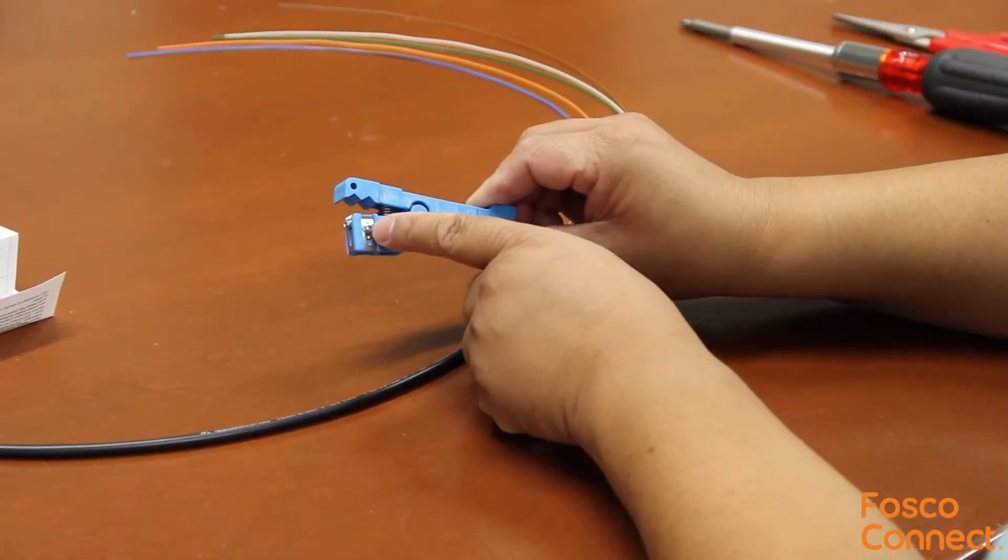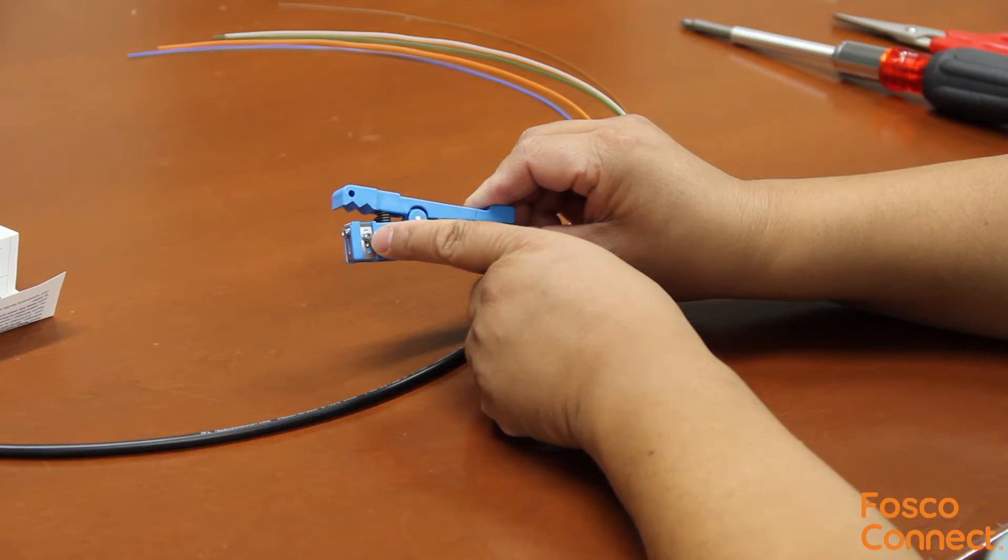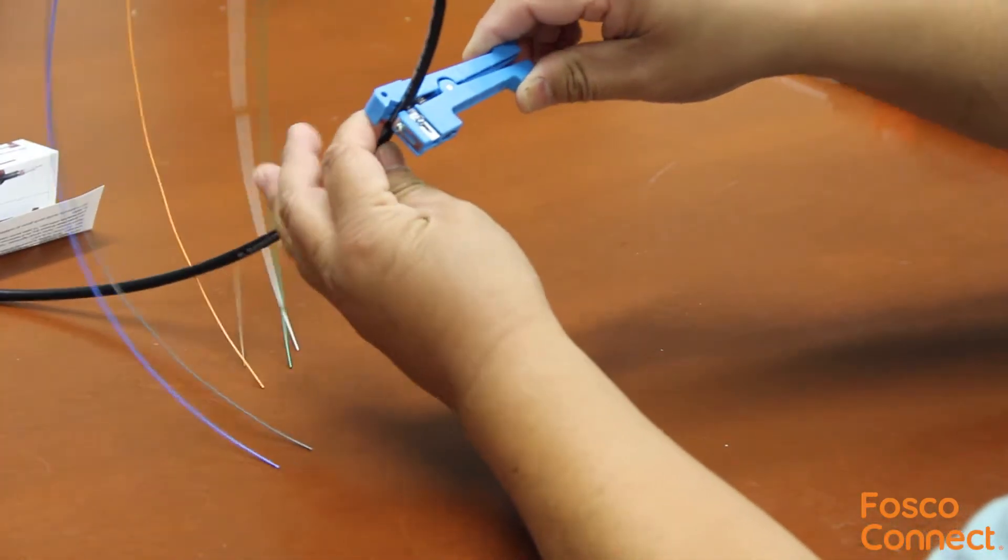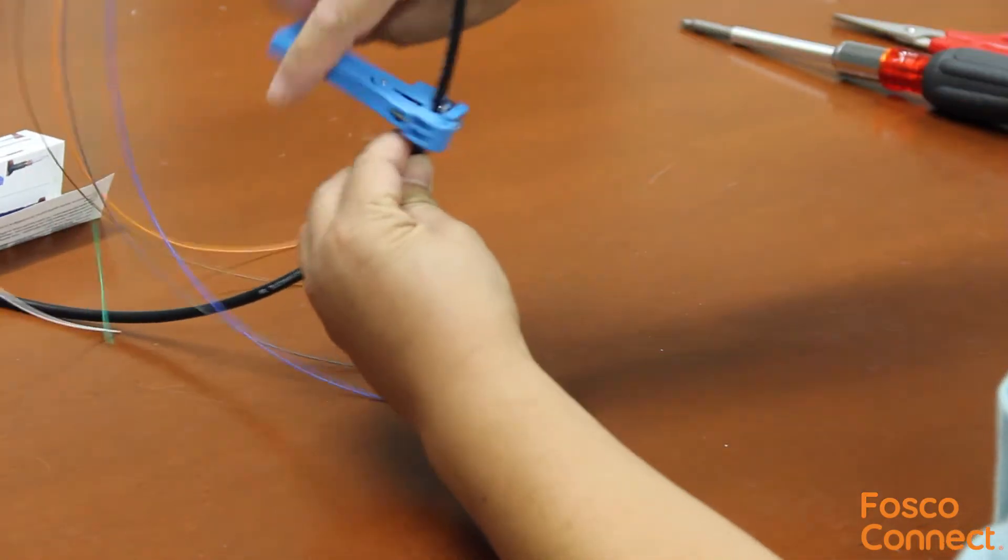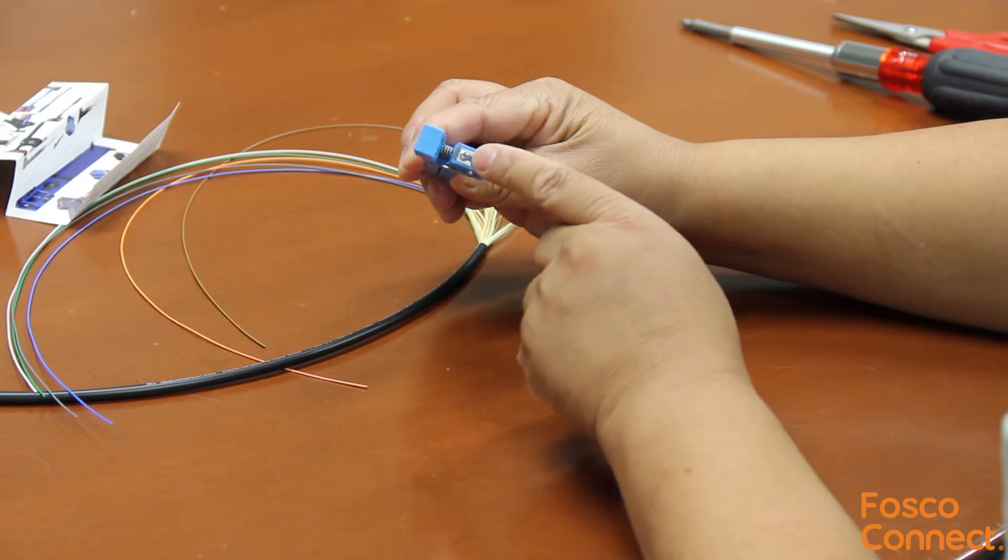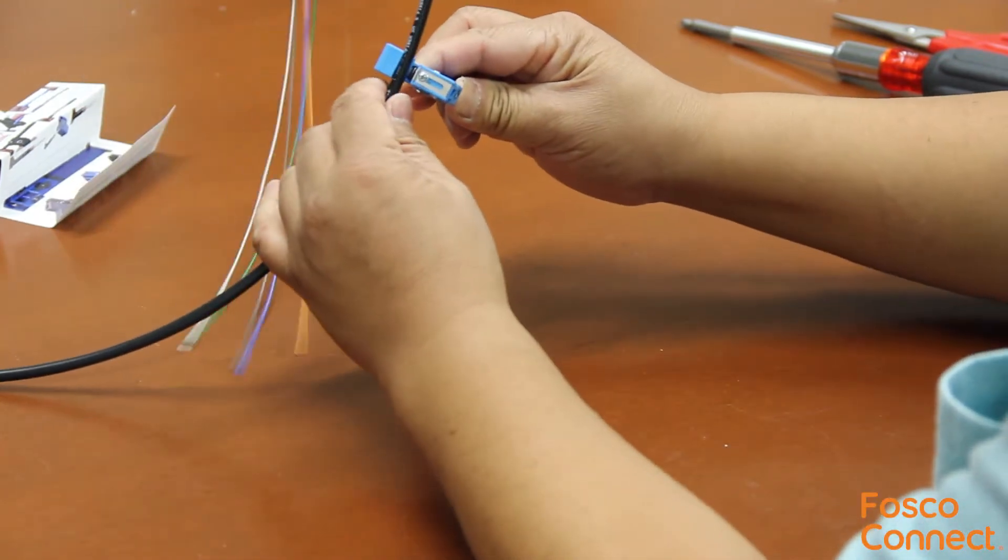It comes with two notches. One notch is for the ring cut. It works like this. The other notch is for the longitudinal cut along the buffer tube length. It works like this.